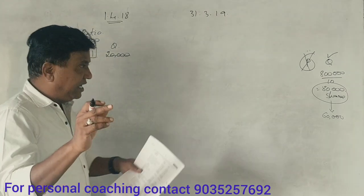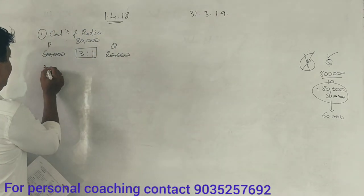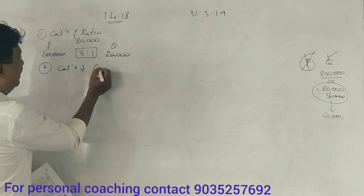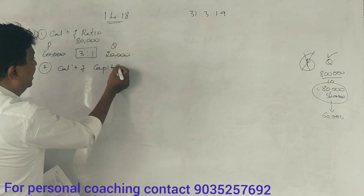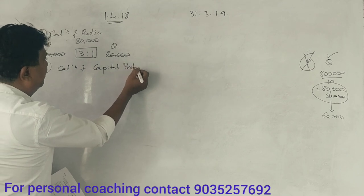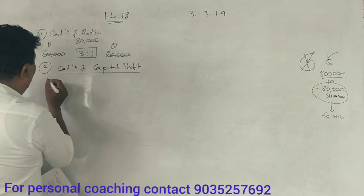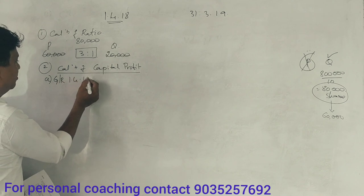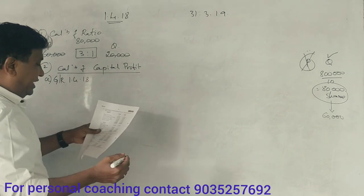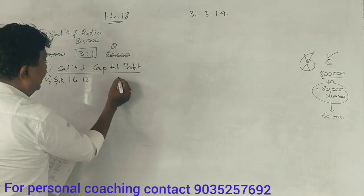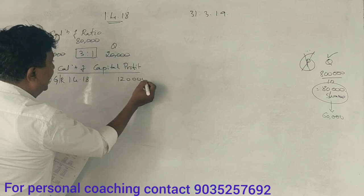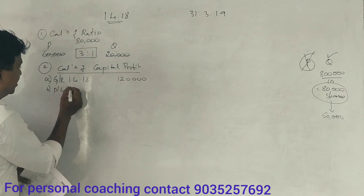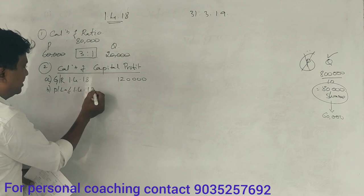This is the calculation of capital profit. Capital profit. General Reserve: 1,420,000. Already 1,20,000. Profit and loss account: 1,420,000.